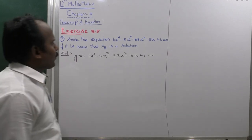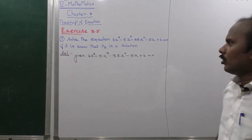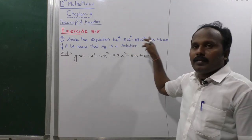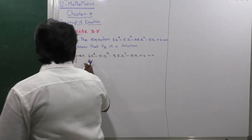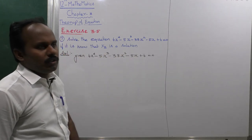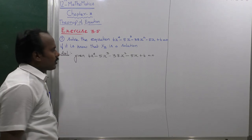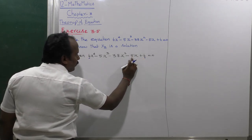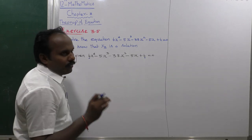Solve the equation 6x⁴ - 5x³ - 38x² - 5x + 6 = 0, given that 1/3 is a solution. This equation is of Type 1 because the first and last coefficients are the same sign and equal, and the second and second-to-last coefficients are also the same number and sign.